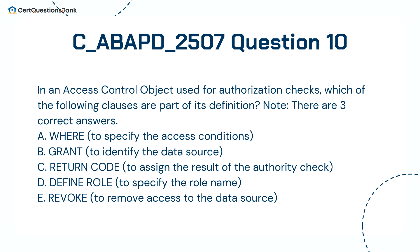In an access control object used for authorization checks, which of the following clauses are part of its definition? Note, there are three correct answers. A. Where — to specify the access conditions. B. Grant — to identify the data source. C. Return code — to assign the result of the authority check. D. Define role — to specify the role name. E. Revoke — to remove access to the data source.